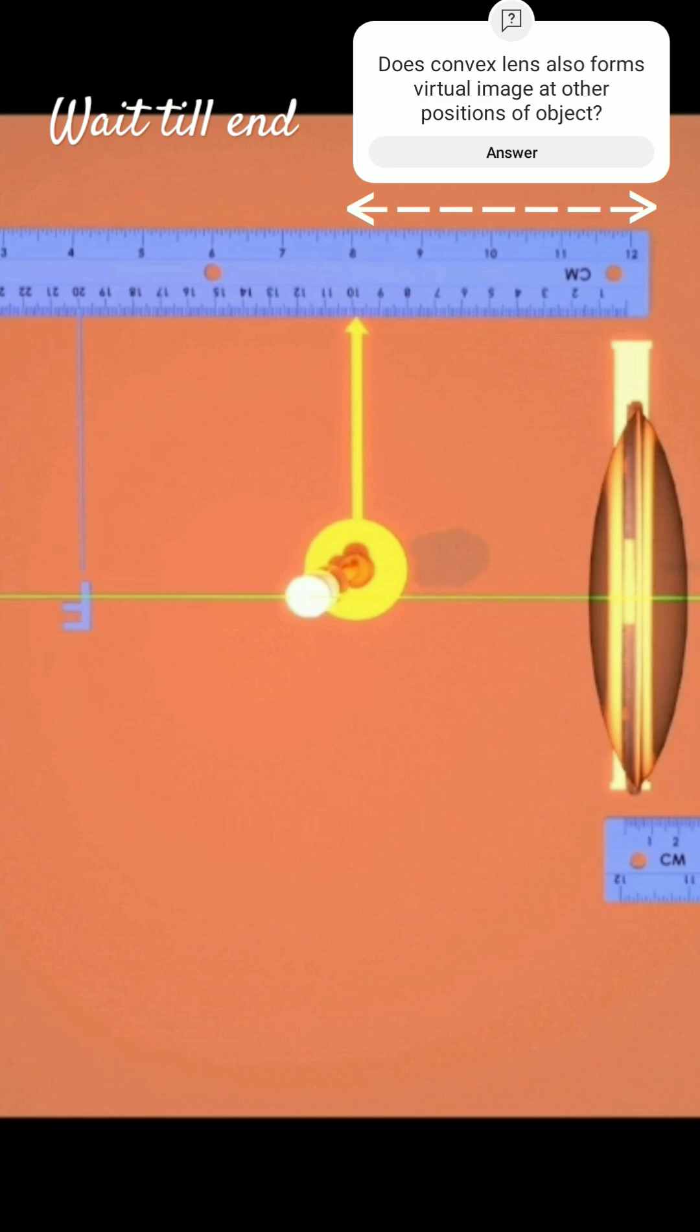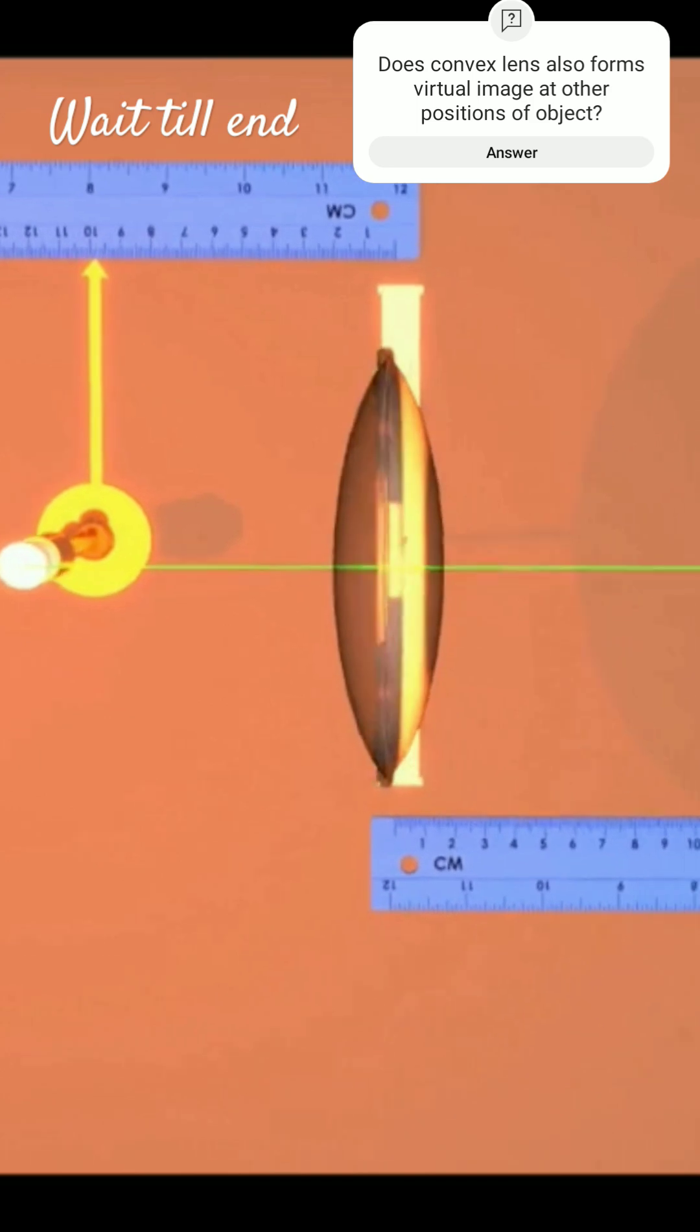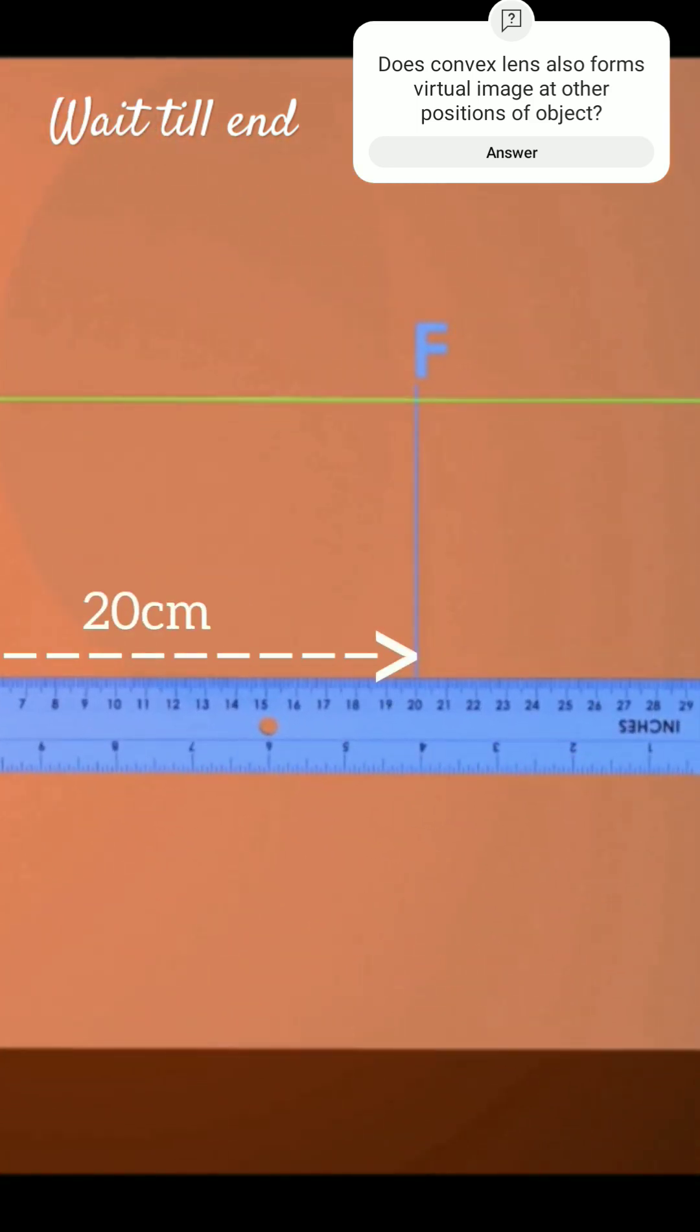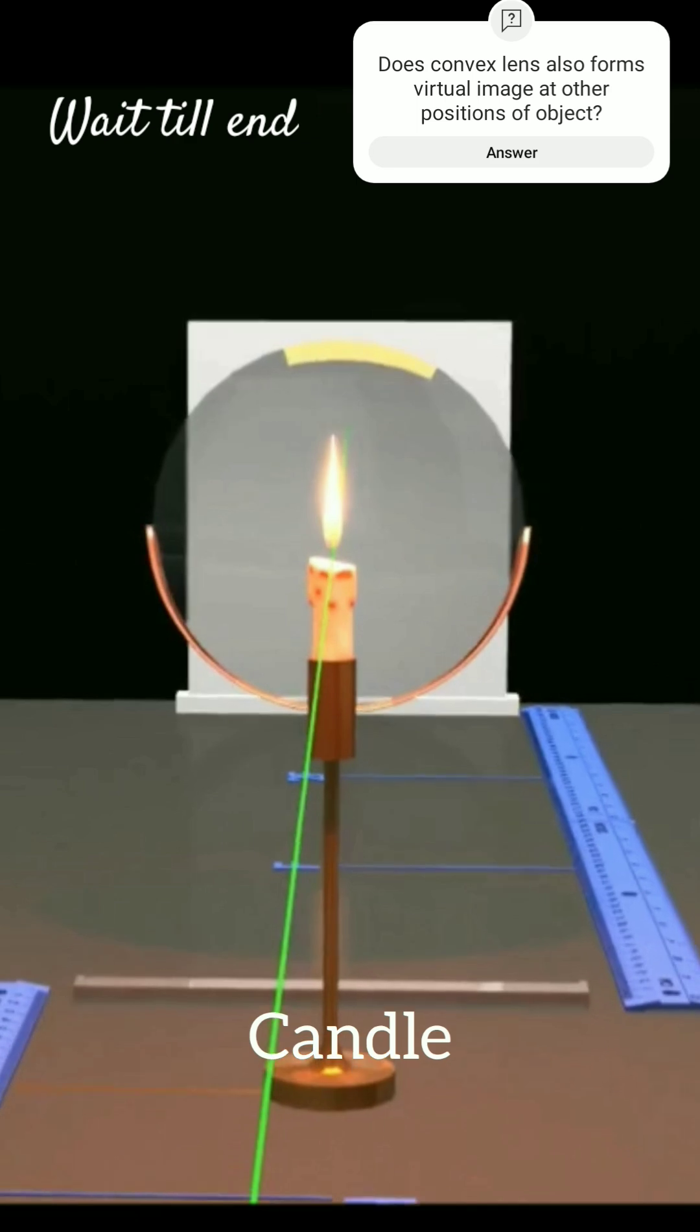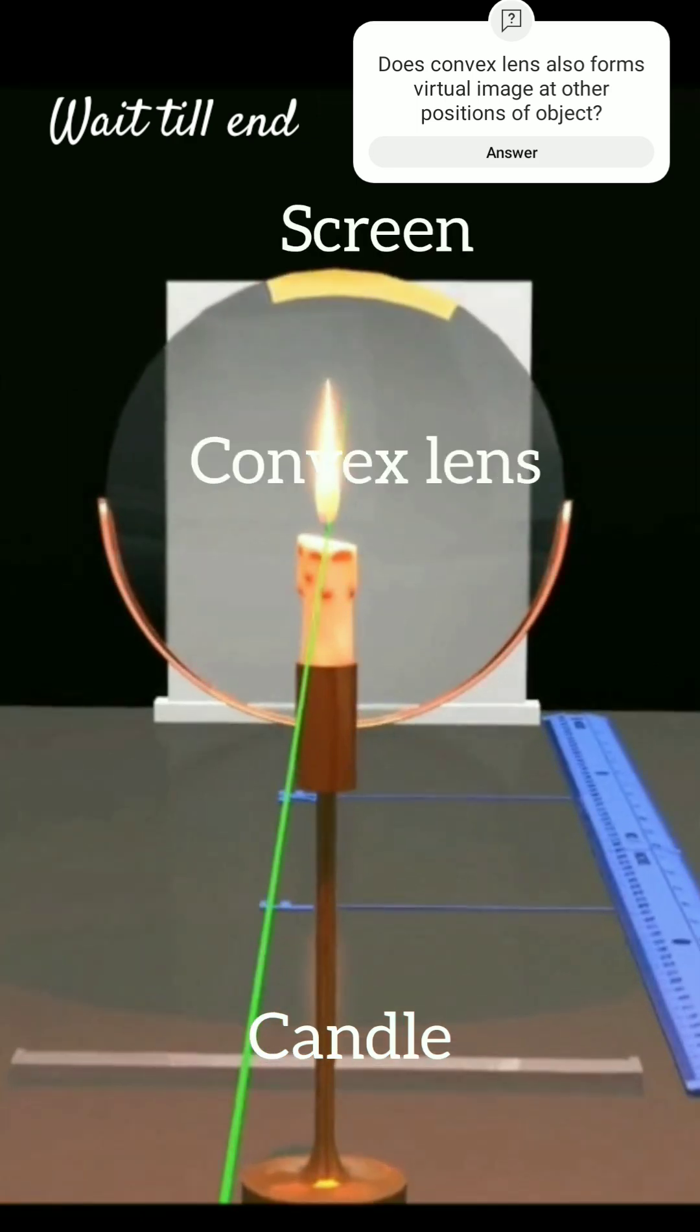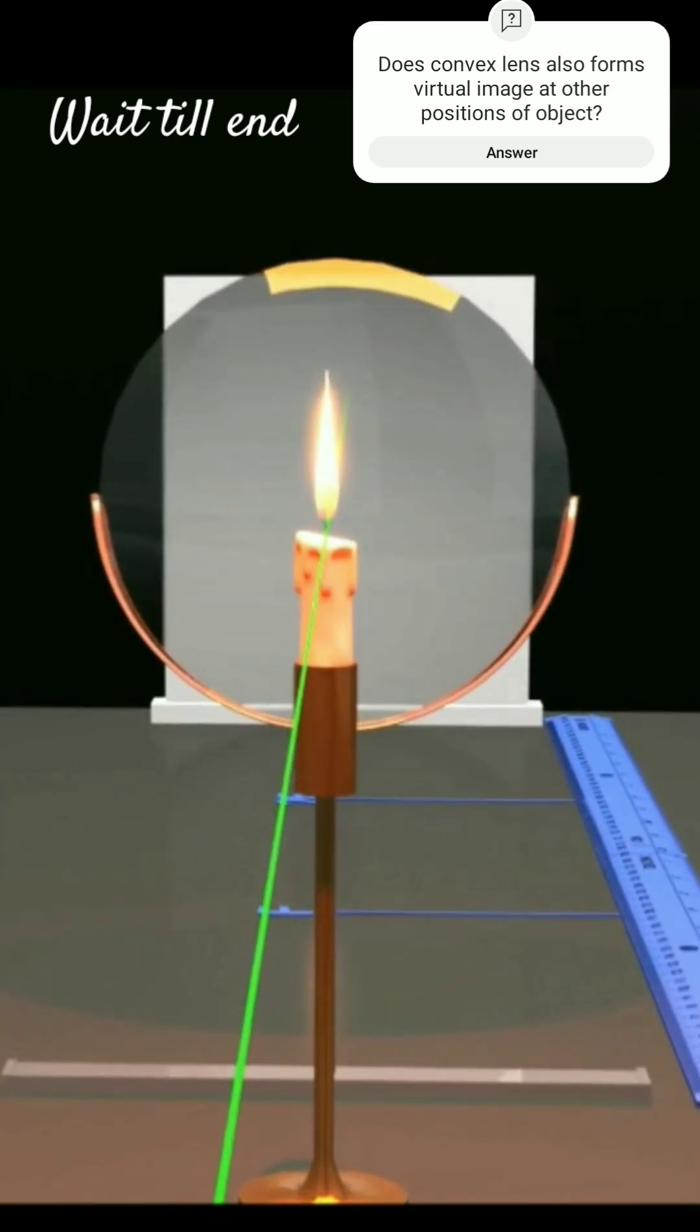Candle is placed at 10 cm from the optical center. The focal length of the convex lens is 20 cm. We will place the candle, convex lens and screen along one straight line coaxial to each other.